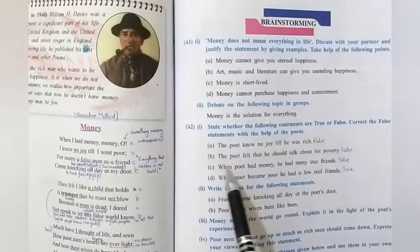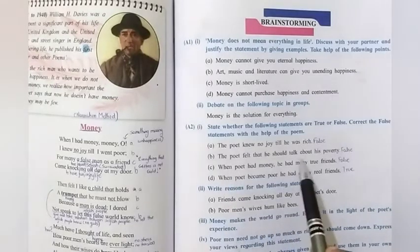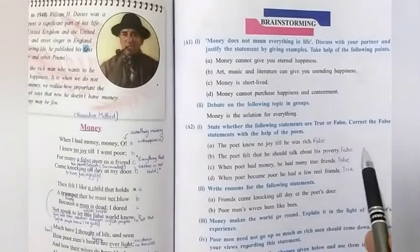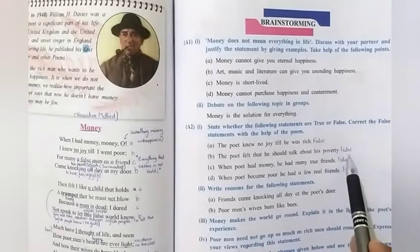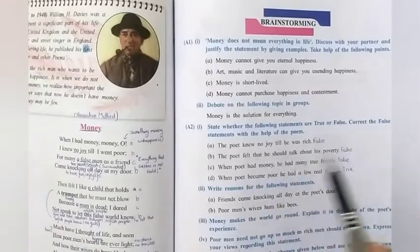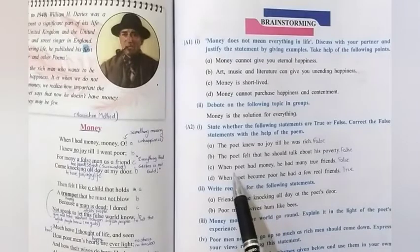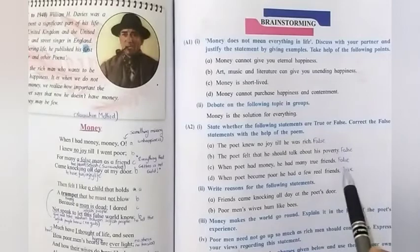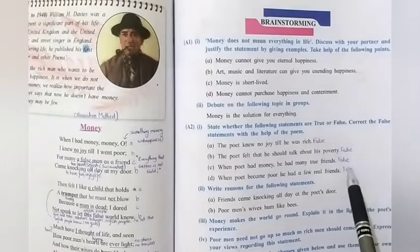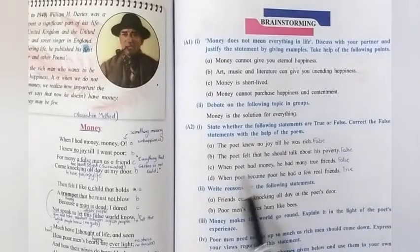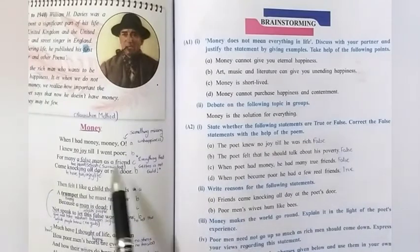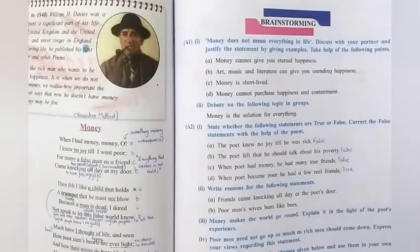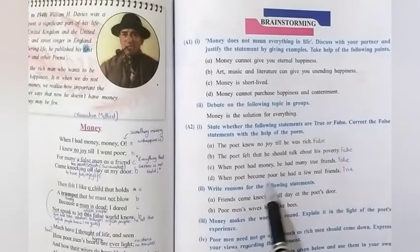Okay, the next is that the poet felt that he should talk about his poverty. The answer to this is false. No, the poet did not want to talk about his poverty. So, when poet had money, he had many true friends. So, this particular sentence is also false because when he had money, he had all the untrue friends or all the false people around him. So, answer to this is also false.